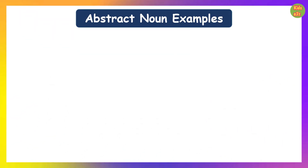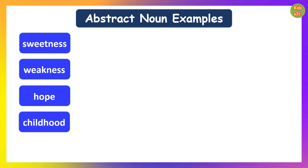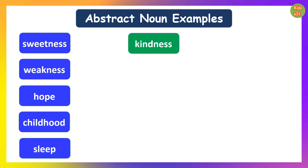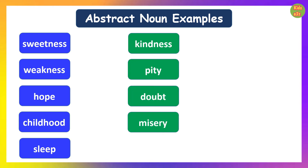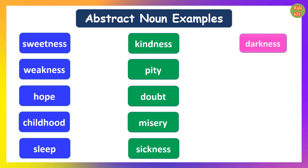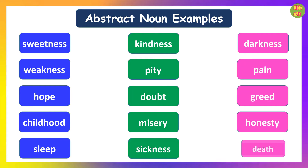Here are some more examples of abstract nouns: sweetness, weakness, hope, childhood, sleep, kindness, pity, doubt, misery, sickness, darkness, pain, greed, honesty, death, etc.